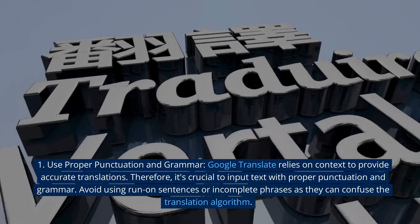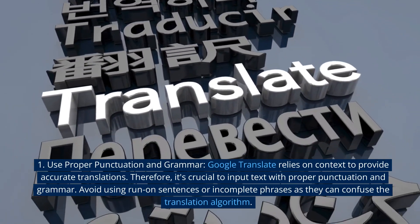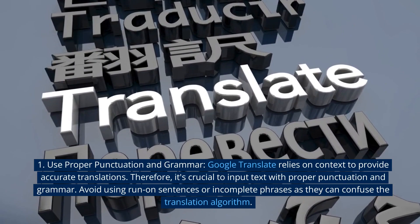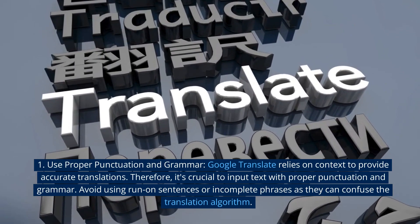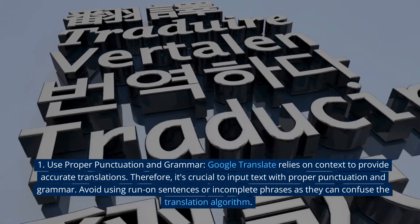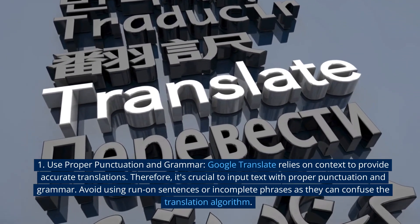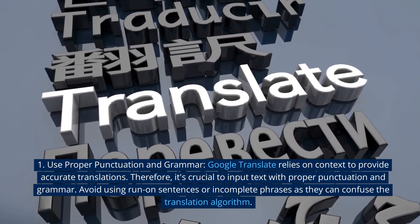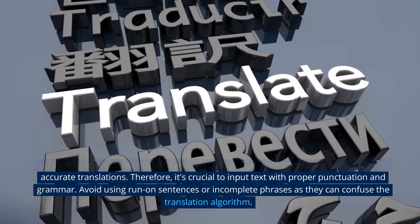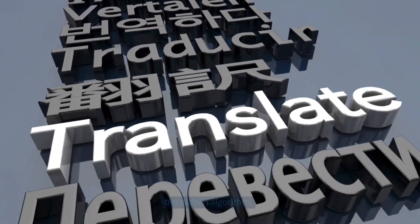1. Use proper punctuation and grammar. Google Translate relies on context to provide accurate translations. Therefore, it's crucial to input text with proper punctuation and grammar. Avoid using run-on sentences or incomplete phrases, as they can confuse the translation algorithm.